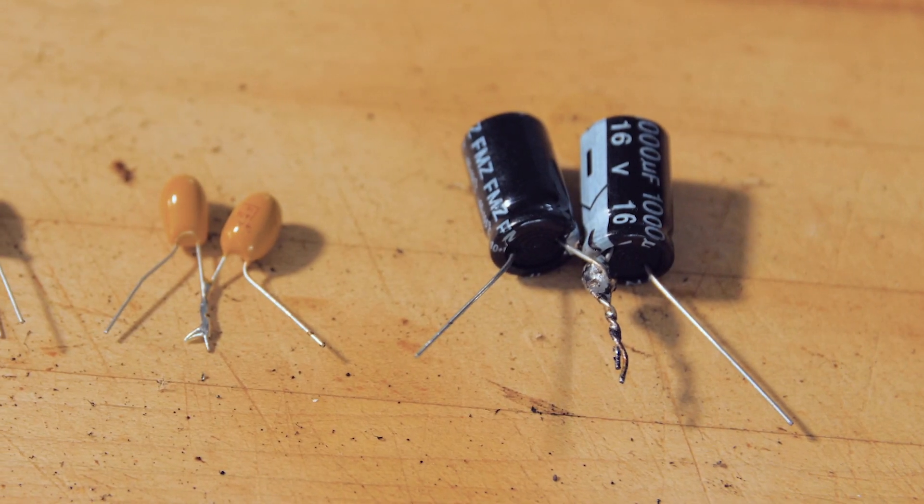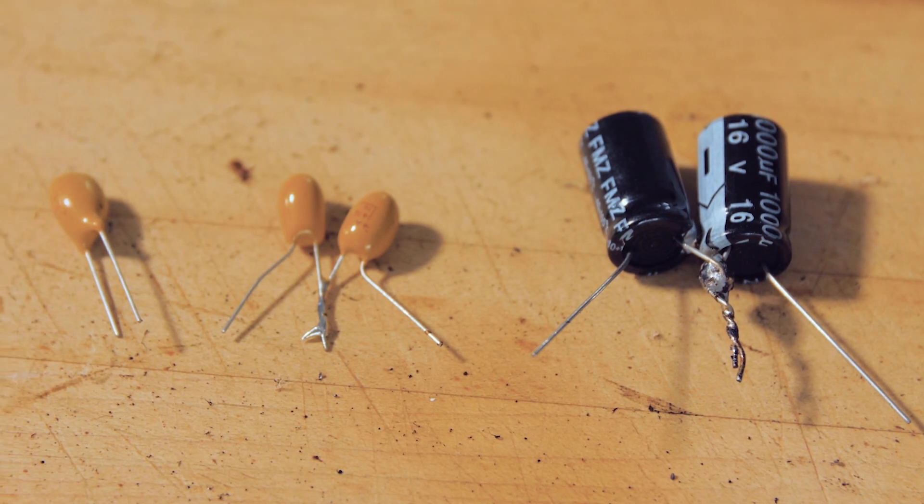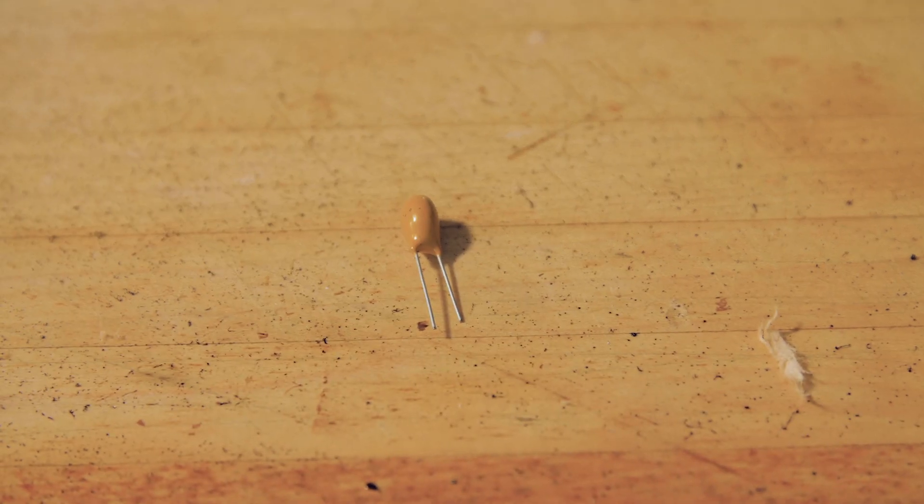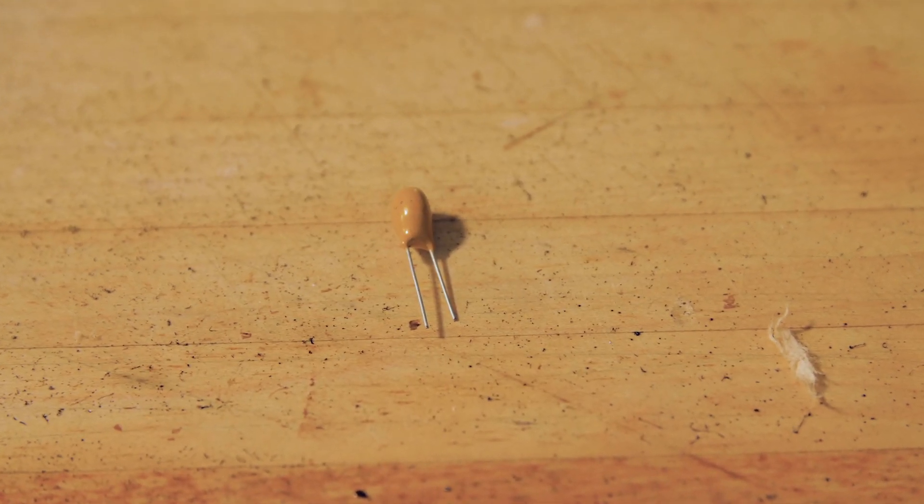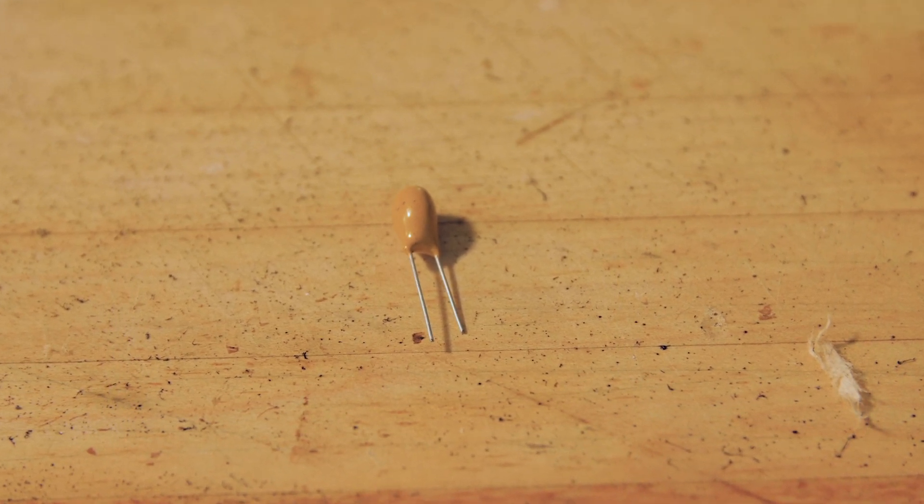Now we turn our attention to tantalum electrolytic caps. Here a pellet of porous tantalum metal serves as an anode covered by an insulating layer of tantalum pentoxide that forms the dielectric surrounded by a liquid or solid electrolyte as a cathode.